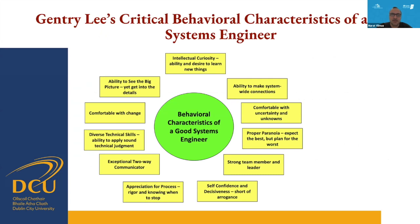Behavioral characteristics of a good systems engineer include: ability to make system-wide connections, comfort with uncertainty and unknowns, proper paranoia — expect the best but plan for the worst — strong team membership and leadership, self-confidence and decisiveness short of arrogance, creation of process, rigor and knowing when to stop, exceptional two-way communications, diverse technical skills, ability to apply sound technical judgment, comfort with change, ability to see the big picture yet get into the details, intellectual curiosity, and the desire to learn new things.